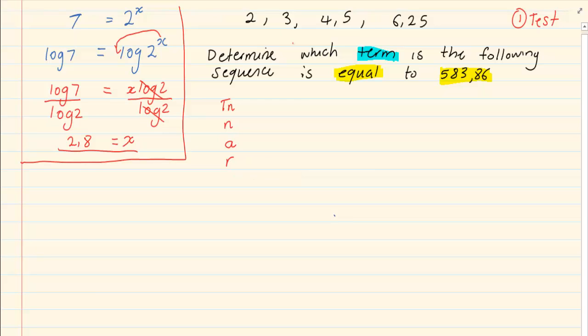Now determine which term in the following sequence is equal to 583.86. We have that a is equal to 2, r is 3 over 2, term 2 divided by term 1. We don't have n but we have Tn, it is 583.86. Once you fill in all the things you need, you go to the formula.